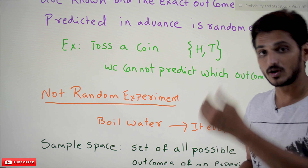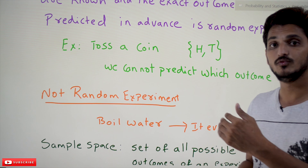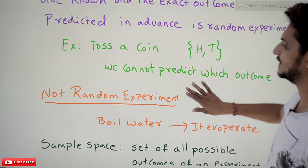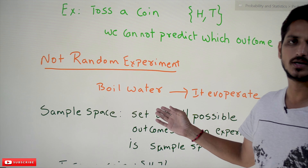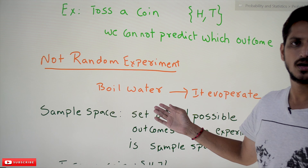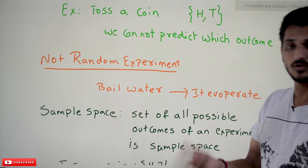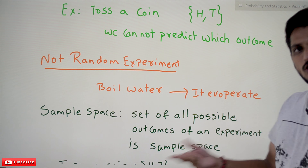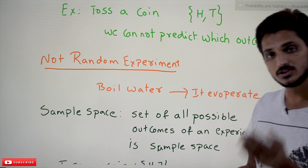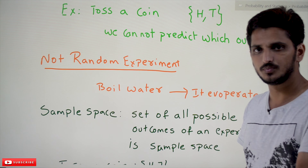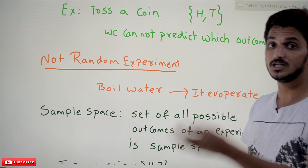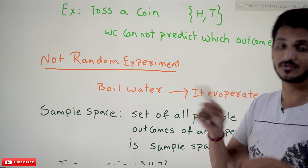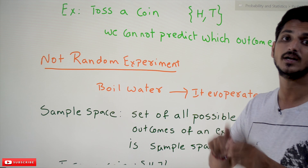Let's understand one more example which is not a random experiment. If you boil water, what is going to happen? Water will evaporate. You know the output — it is easy to predict the output. In a random experiment you cannot predict the output. That is the difference between experiment and random experiment.